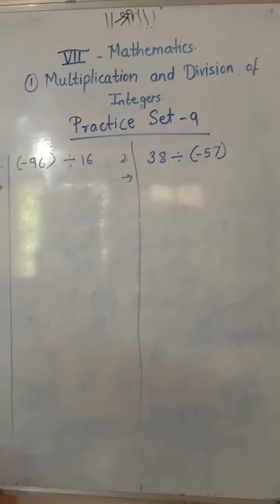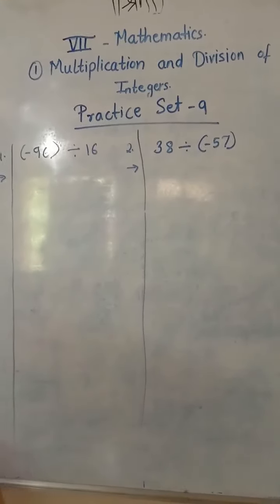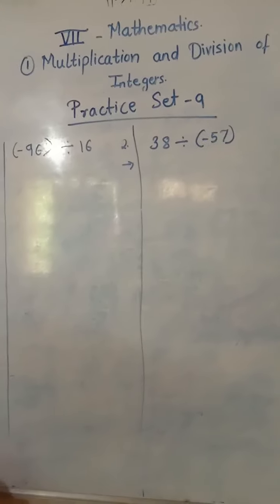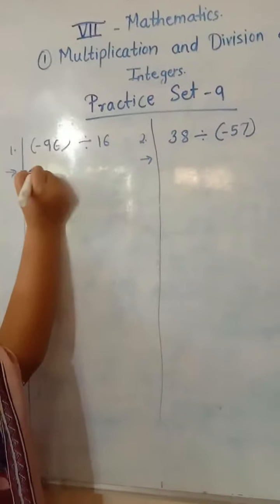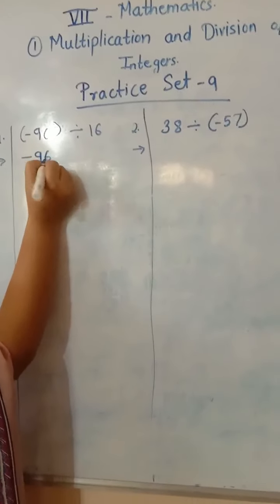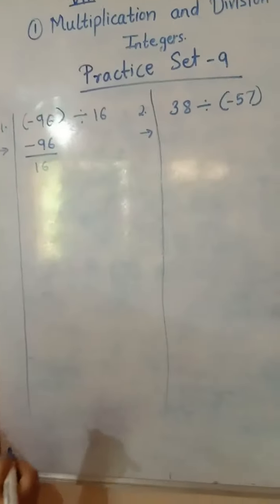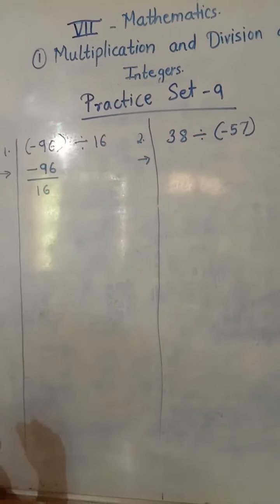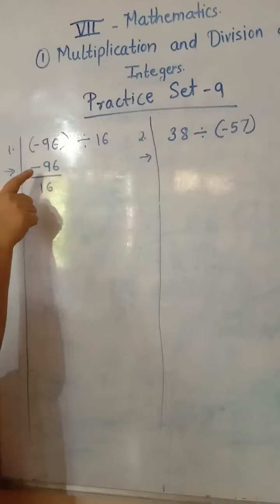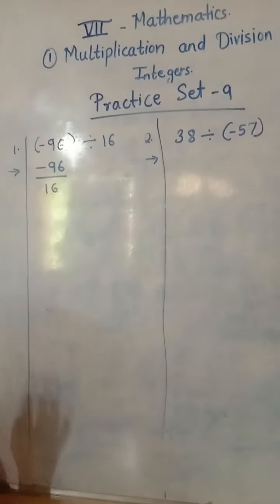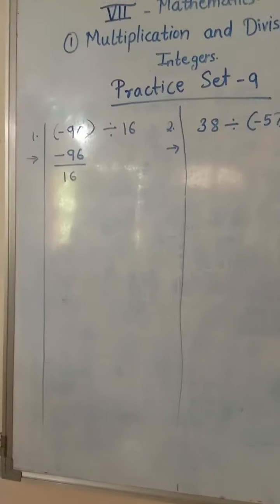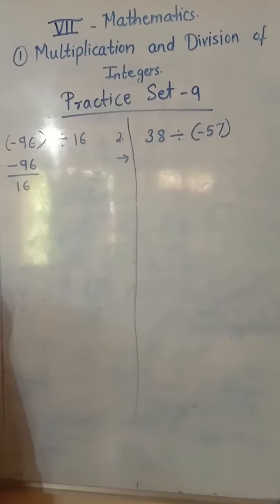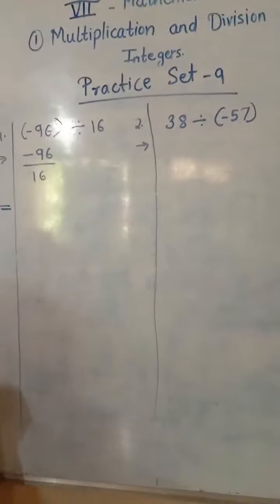Now we shall start with Practice Set 9. The first sum is negative 96 divided by 16. Write this in the form of a fraction: negative 96 divided by 16. After writing in fraction form, we will look at the sign. The sign is correct because the negative sign needs to be in the numerator and it is in the numerator. Now check — write this in multiplication form.